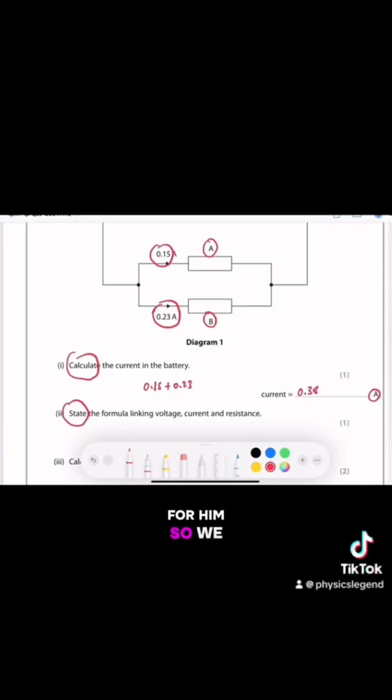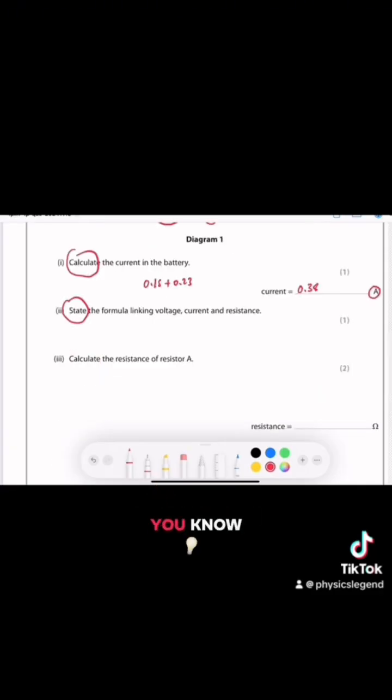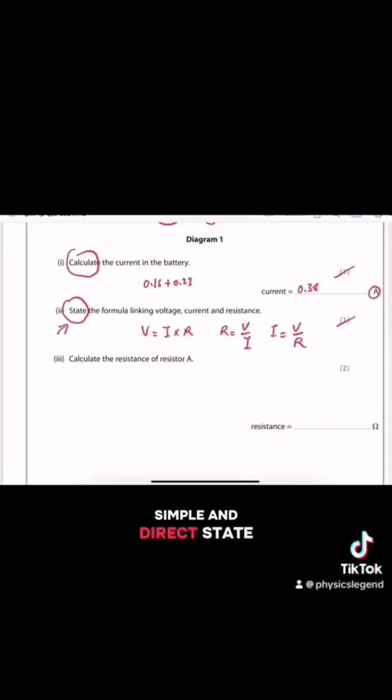Part II - Command word state. The formula linking voltage, current, and resistance. Ohm's law: V = I times R, R = V over I, I = V over R. Any one of these we get. One mark, simple and direct. State it exactly like that in the exam.